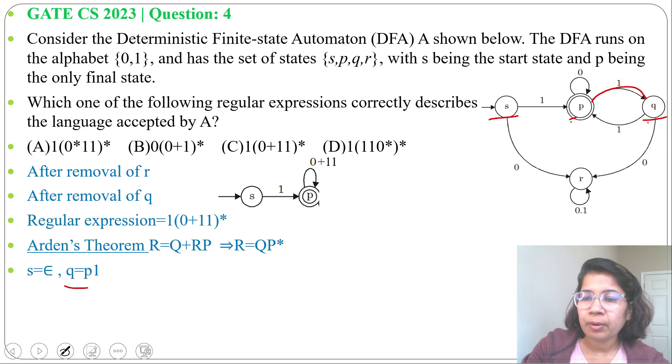Next we'll write for P. P equals S1, from S by 1 we are reaching to P. So Q1, then from P by 0 we are reaching to P, so plus P0.